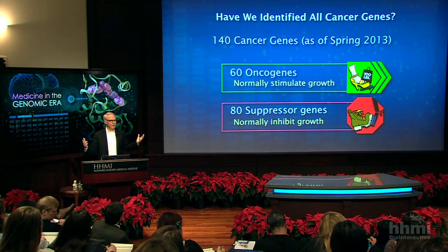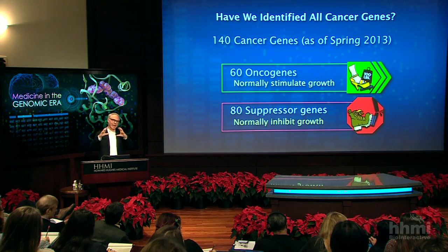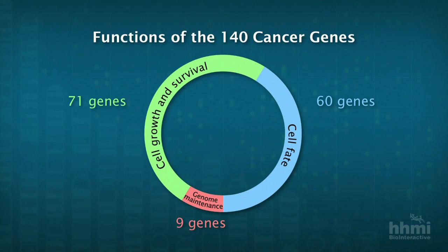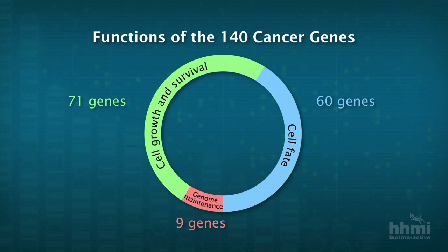With 140 cancer genes, can we categorize them into different buckets and see patterns that are emerging? The answer is yes. In this circle, I'm showing you three different categories that the cancer science community has agreed upon. Don't hold me to only three — I suspect there will be small additions and perhaps new categories that emerge, but they're not going to be dominant causes of major percentages of cancer.